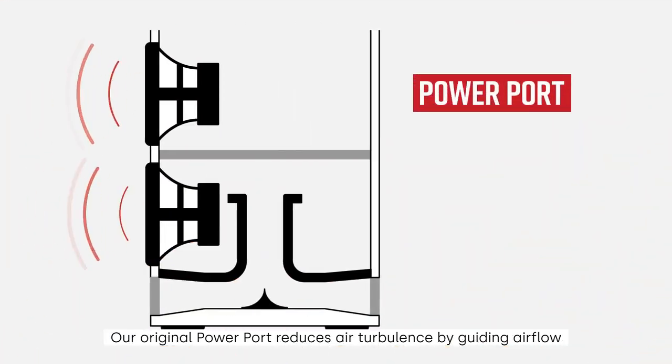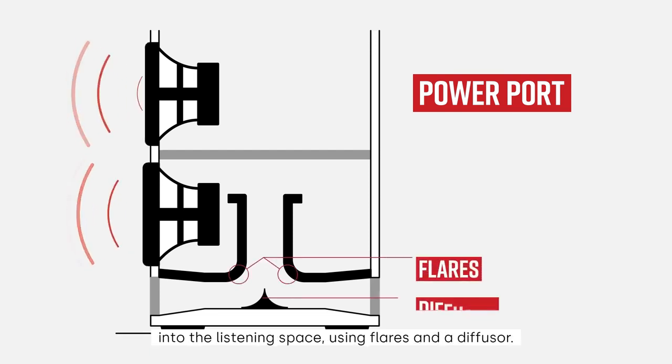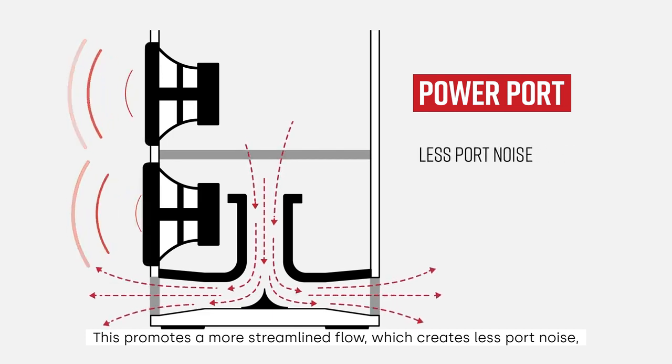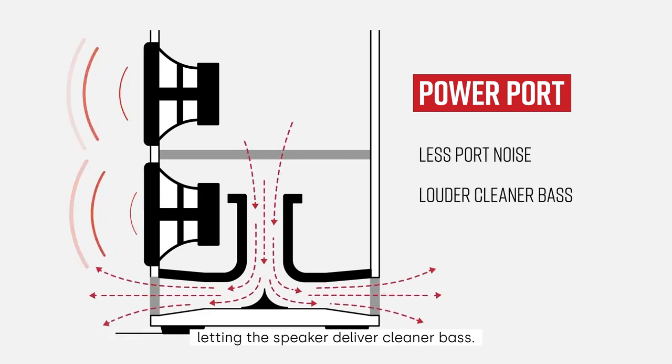Our original PowerPort reduces air turbulence by guiding airflow into the listening space using flares and a diffuser. This promotes a more streamlined flow, which creates less port noise, letting the speaker deliver cleaner bass.